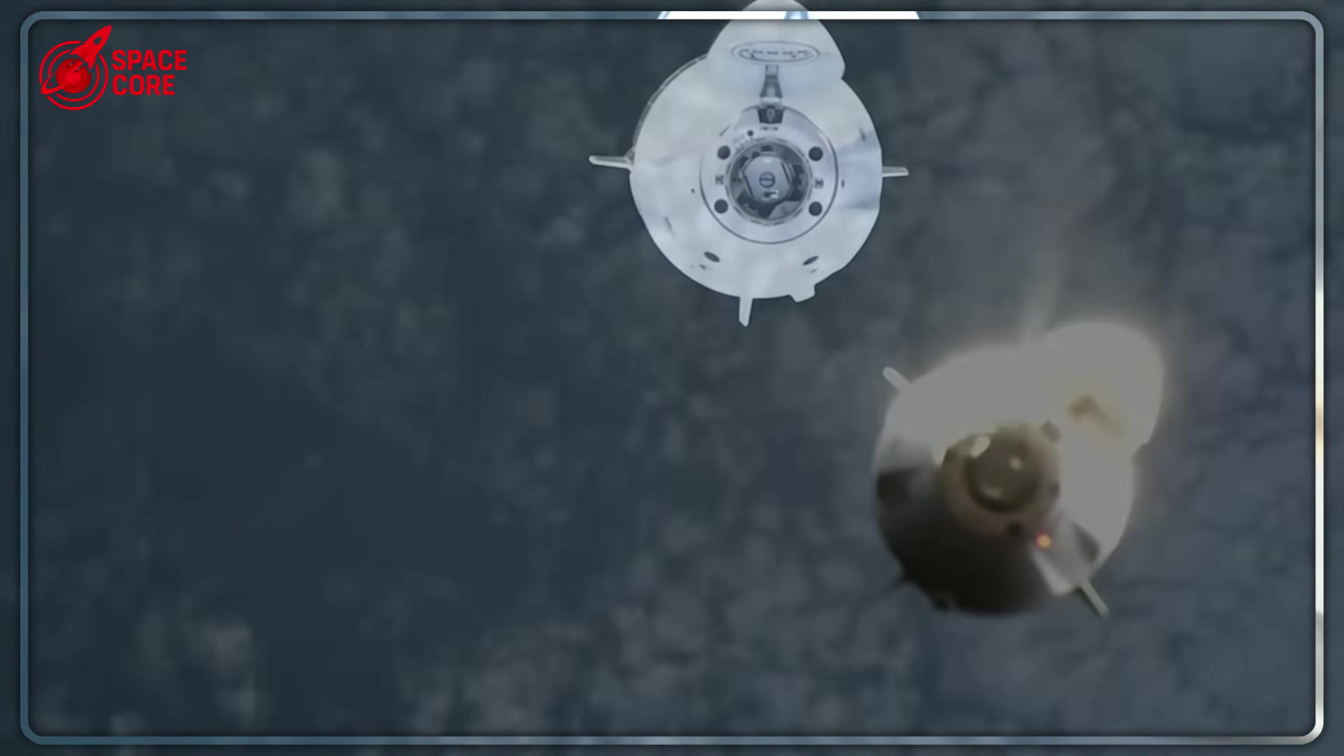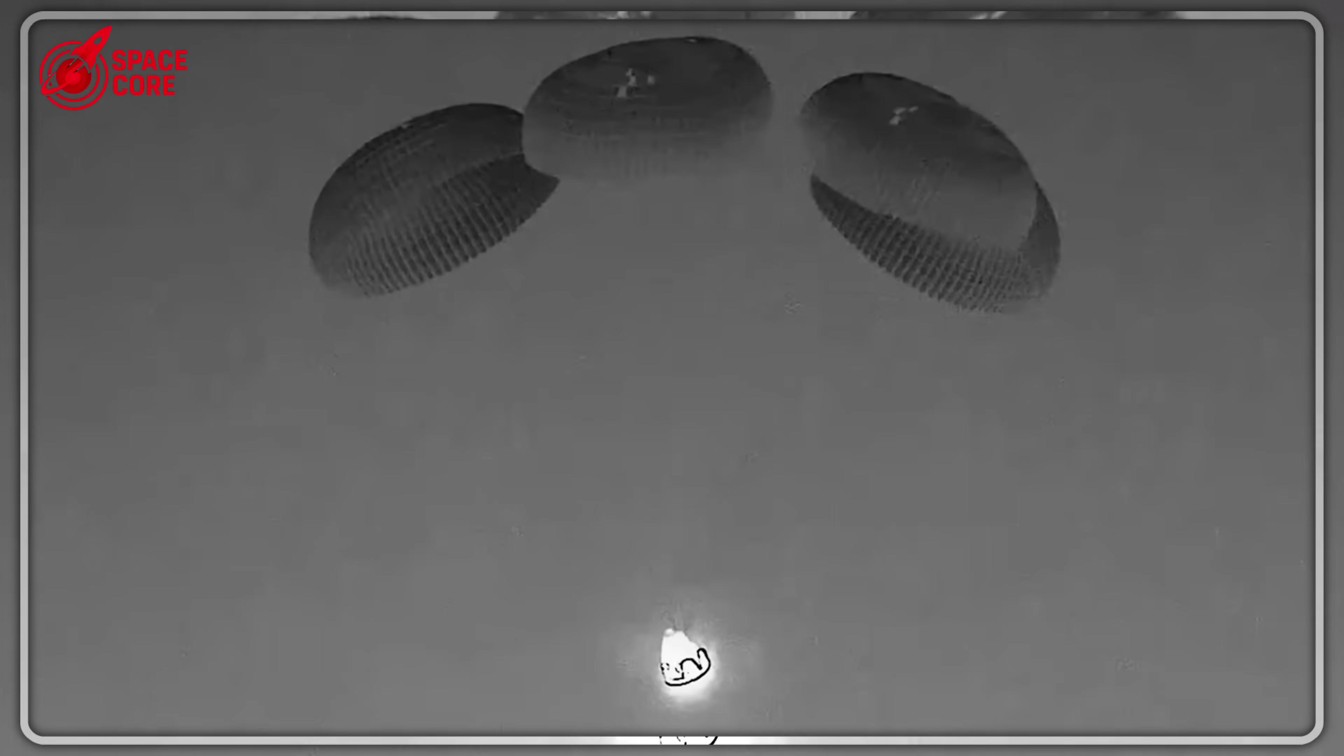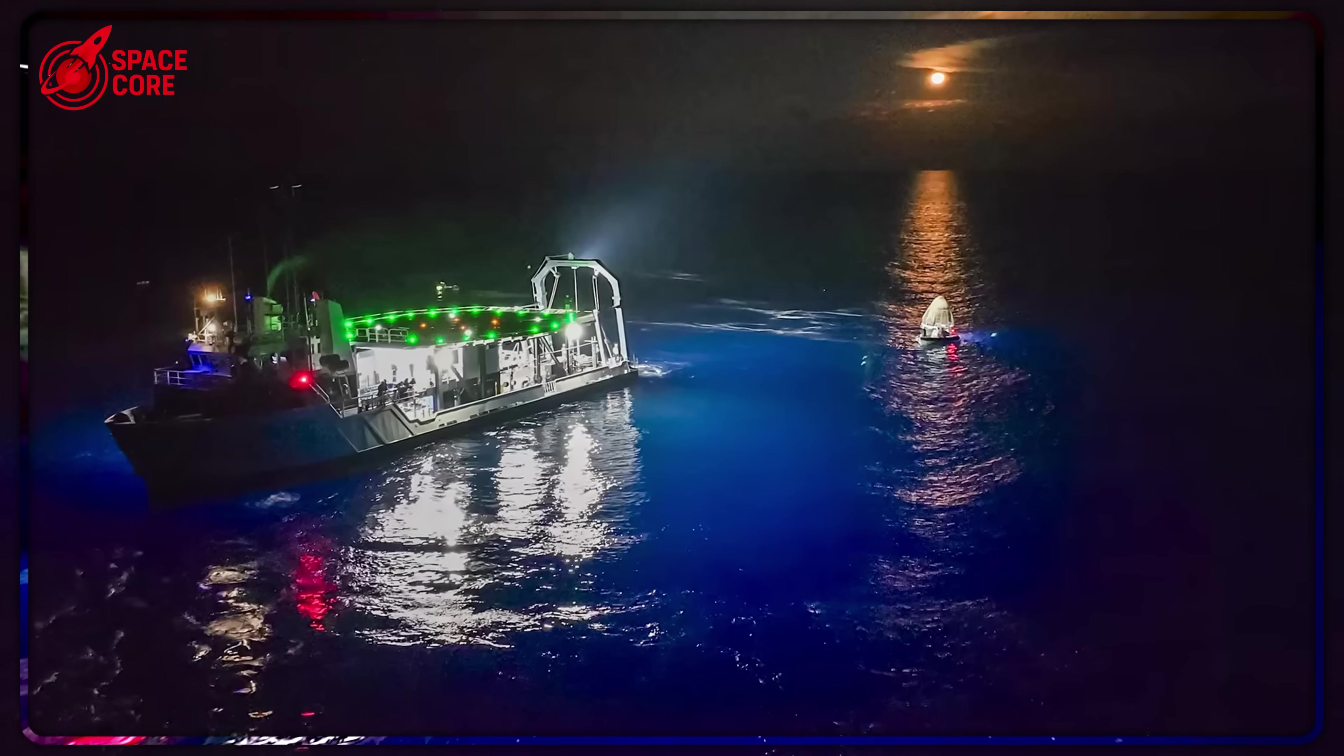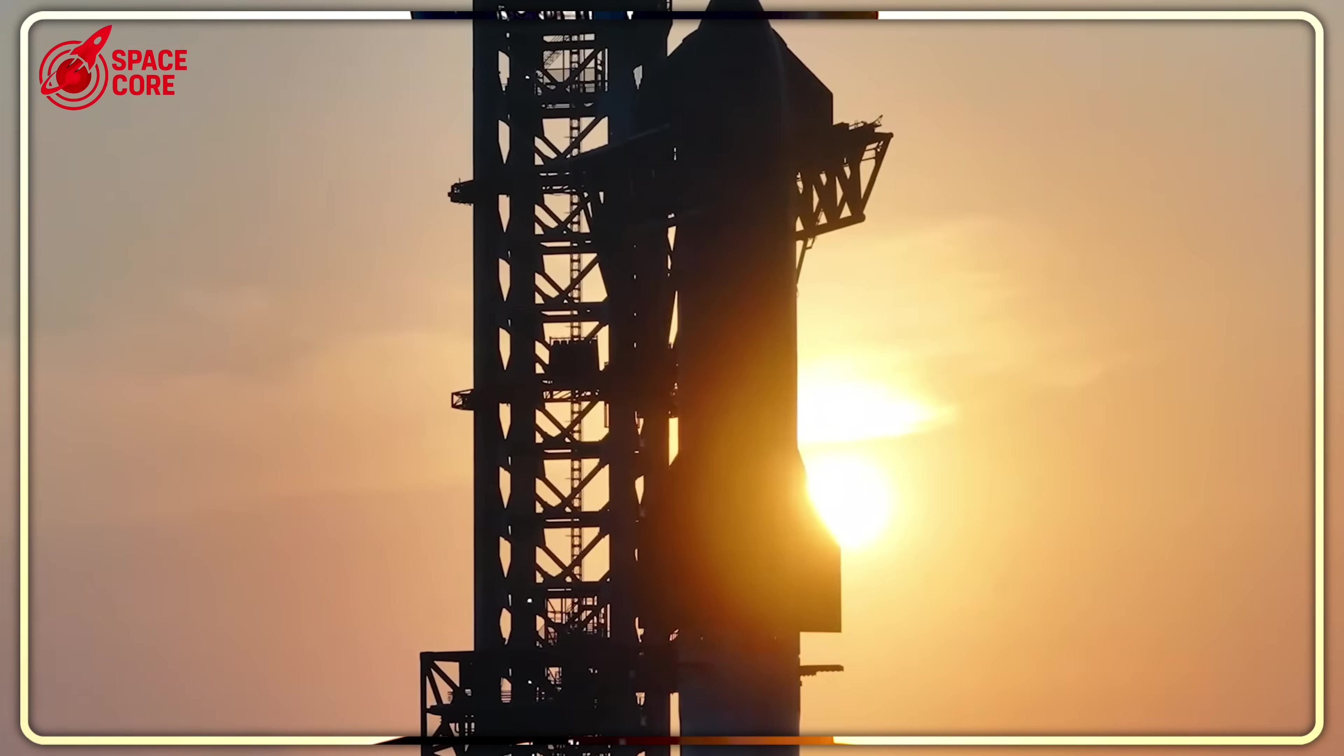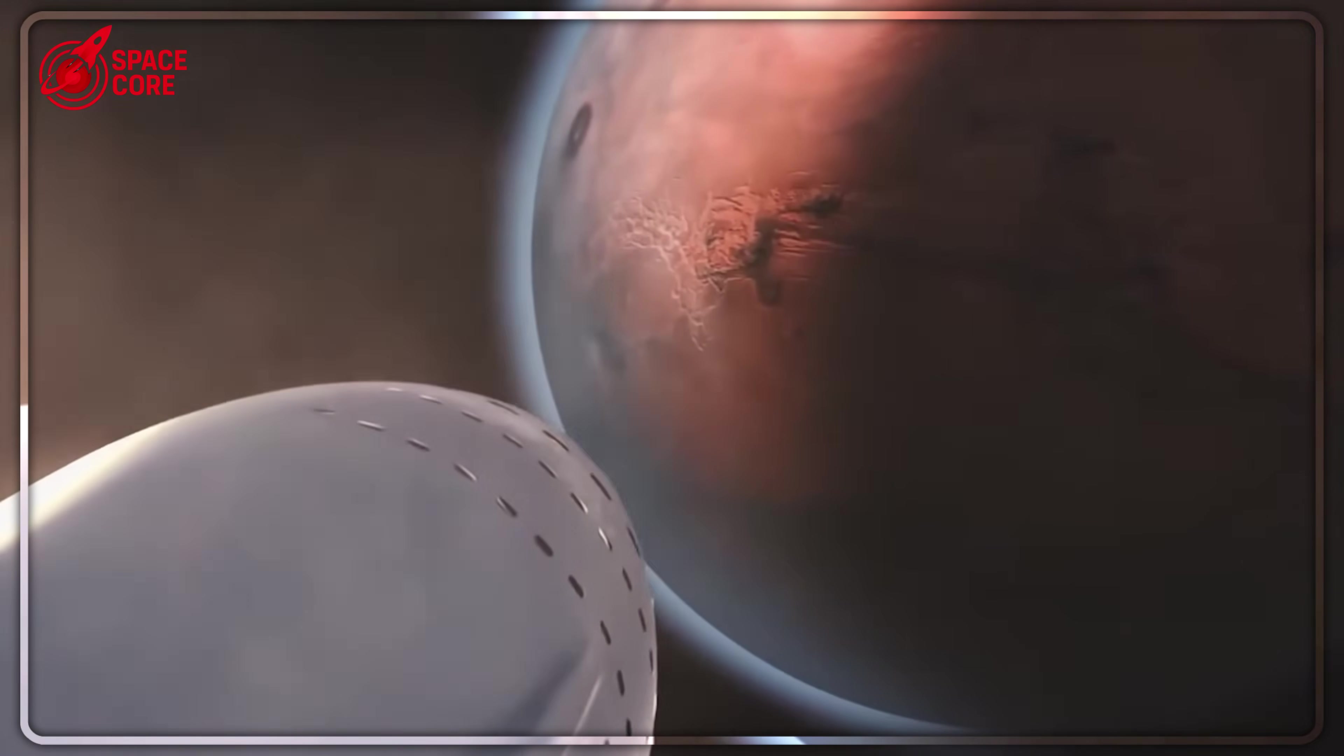Think about it. When you're screaming toward Mars at thousands of miles per hour, parachutes are basically tissue paper. The only way to land anything heavy on the red planet is rockets firing at the last second to slow you down. No exceptions, no alternatives. So when Musk watched dragons splash into Earth's oceans, he wasn't seeing success. He was seeing proof that his current technology was useless for the mission that mattered most.